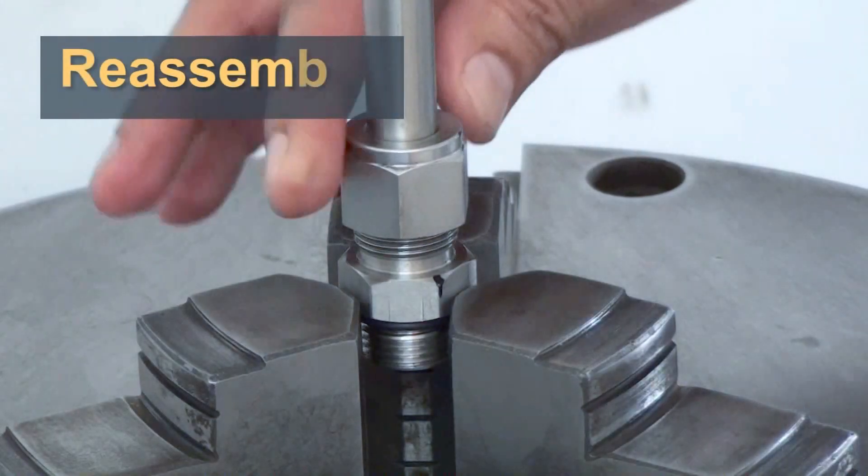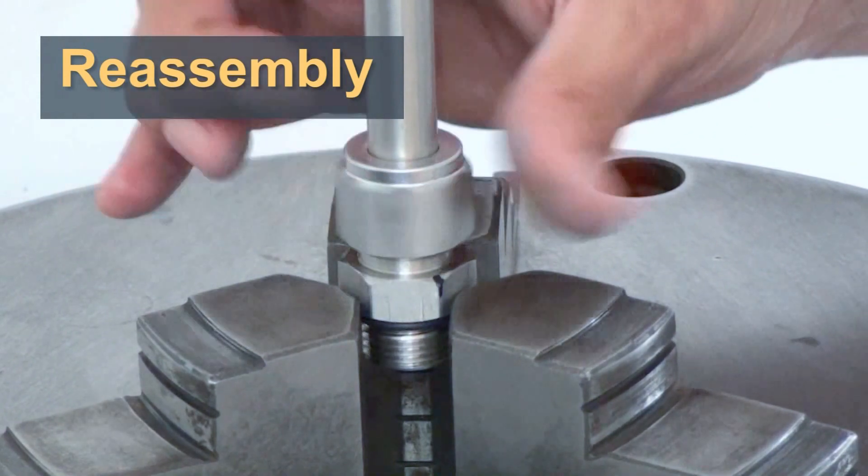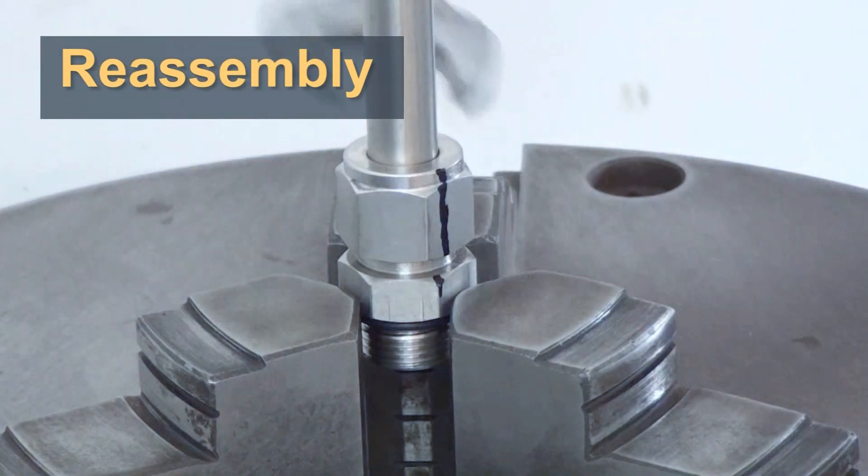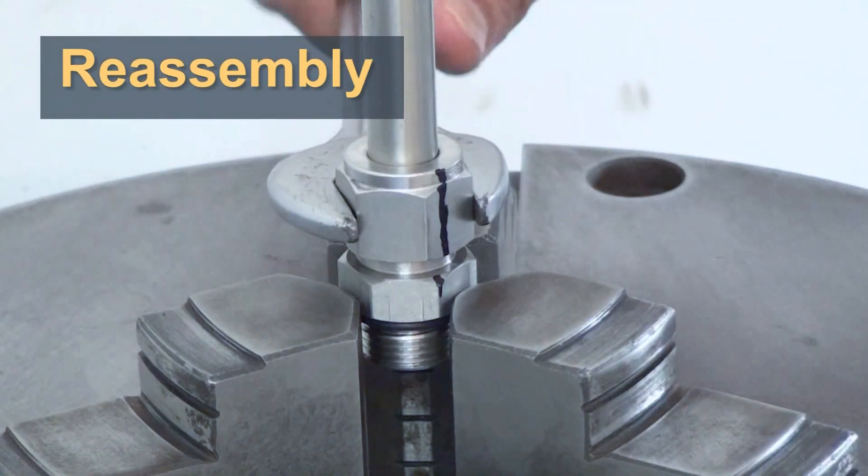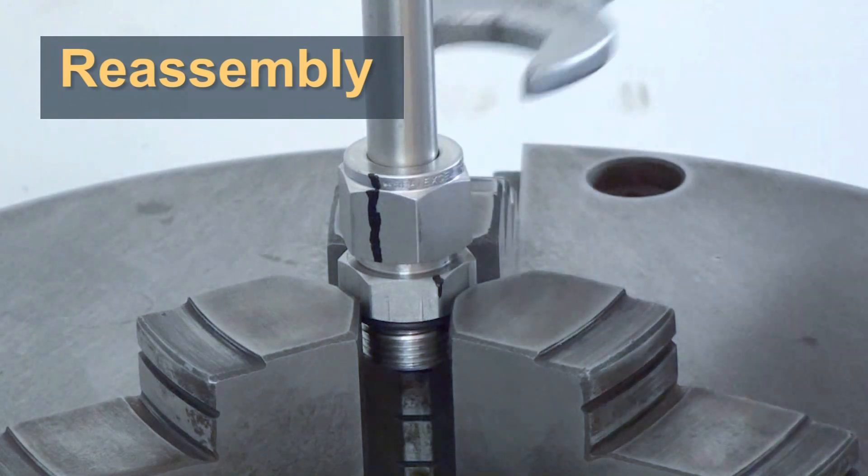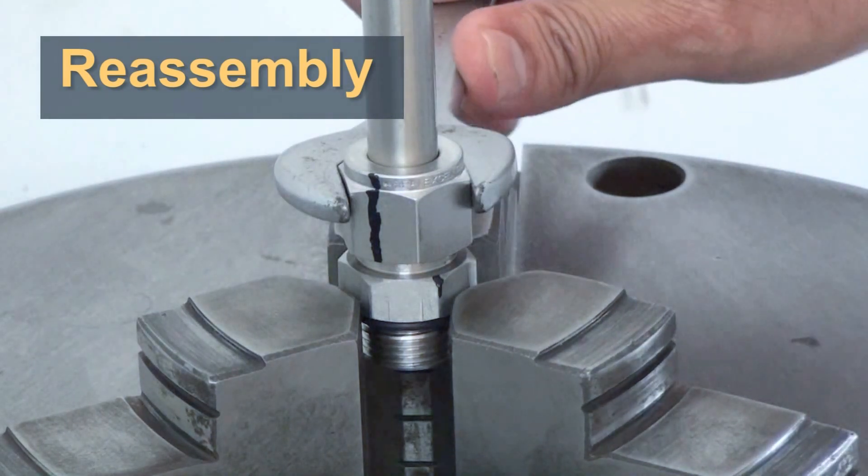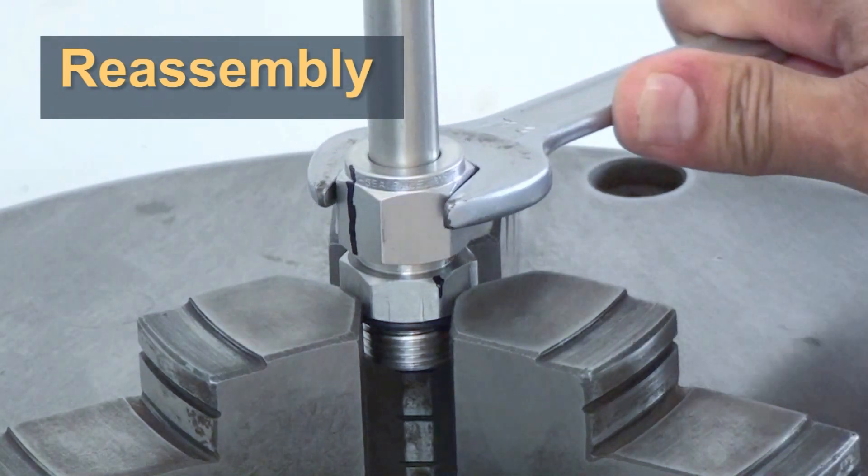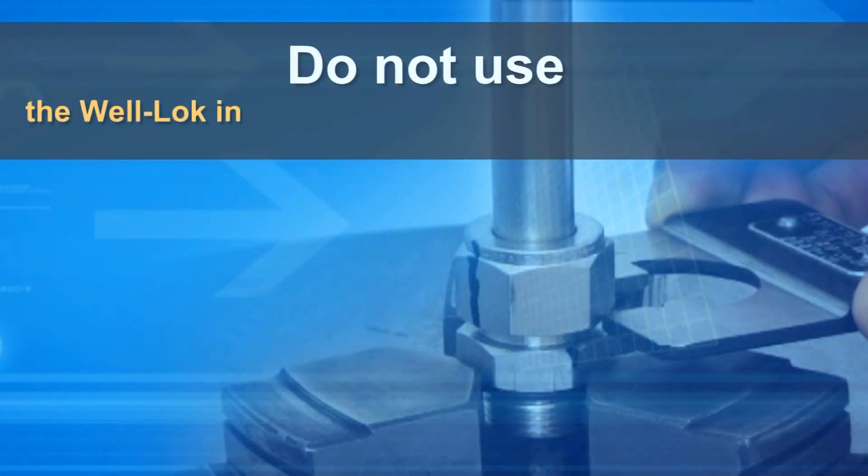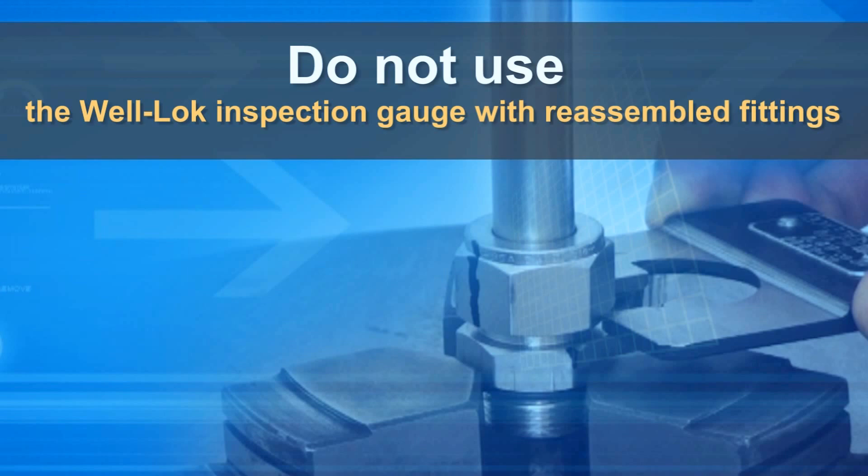Reassembly. Insert the tubing with the ferrule into the fitting body. Rotate the nut with the wrench to the previously put position. This time, you will find a significant increase in resistance. Use a wrench to tighten the nut a bit further. Do not use the Well-Lock Inspection Gauge with reassembled fittings.